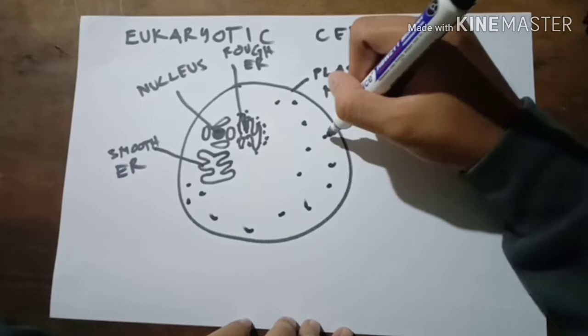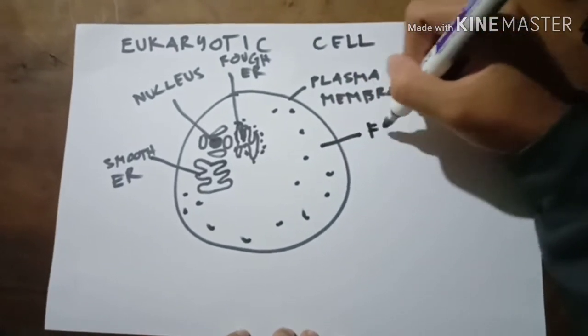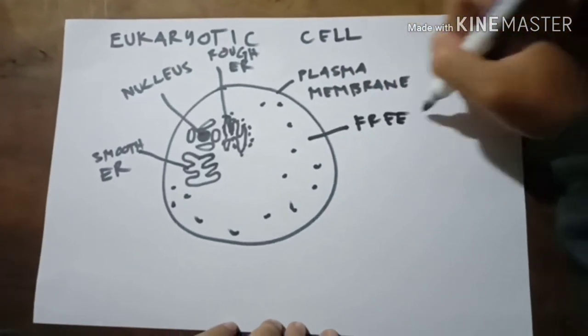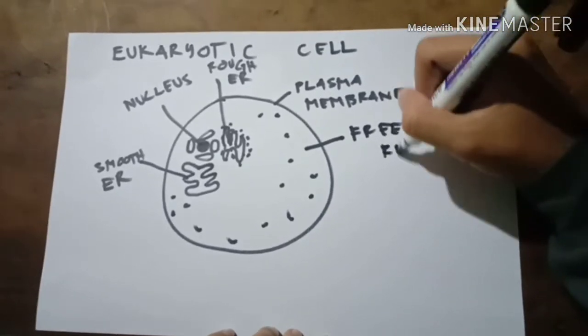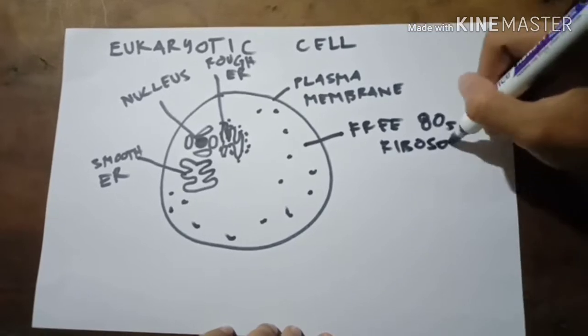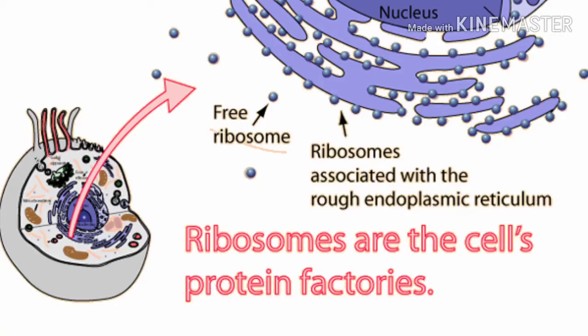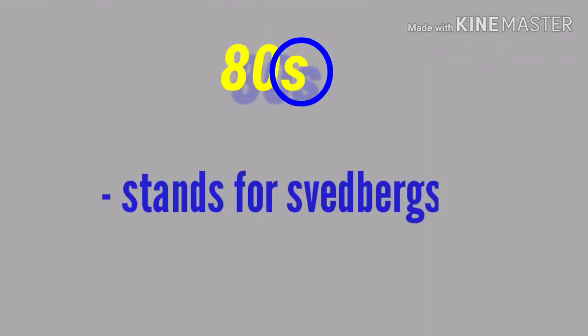This is the free 80S ribosomes. The free ribosomes are important because they produce proteins essential for internal cellular activity. The 80S — where S stands for Svedberg, a unit used to measure how fast molecules move in a centrifuge.